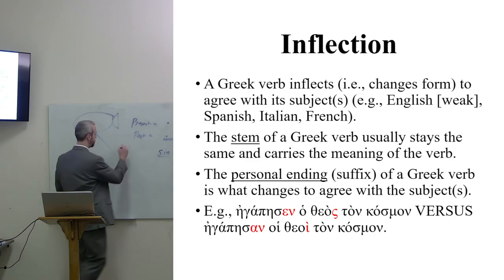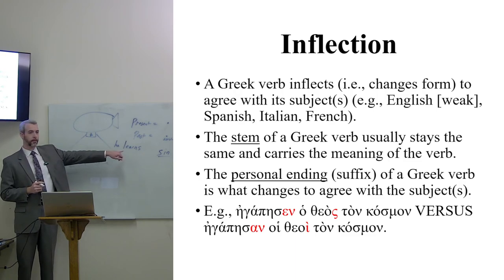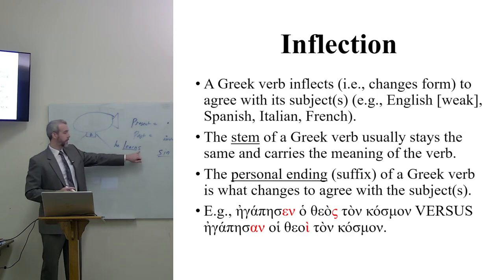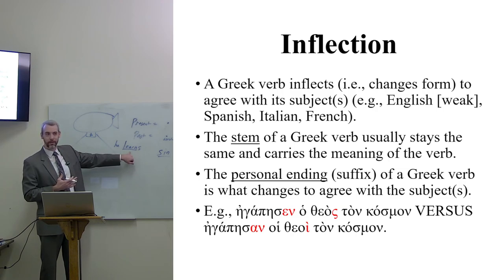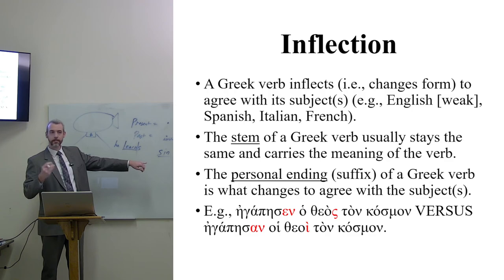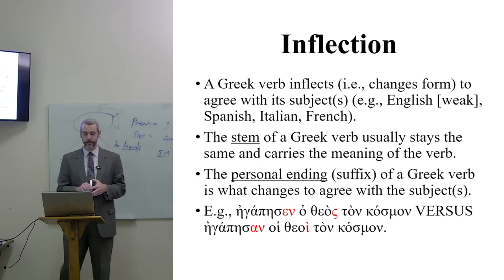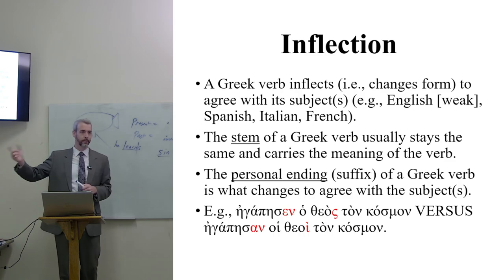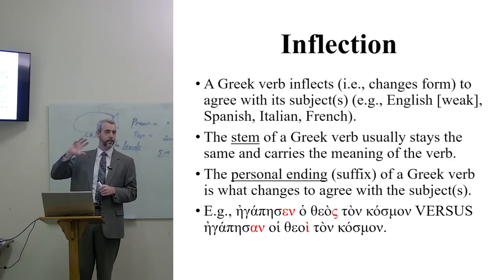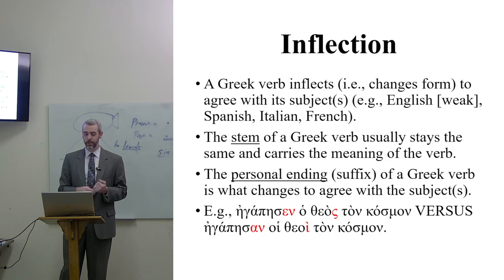Greek verbs are going to be very similar to what we've reviewed. They inflect — they change form — just like some English verbs change form to agree with the subject. In English this is weak, but you see it strongly in Spanish, Italian, French, and very much so in Greek. By inflection, I mean changing form to match the subject. The stem of a Greek verb usually stays the same and carries the meaning. For example, 'he learns' — the stem is 'learn,' and the 's' tells you about person and number but nothing about meaning. Same in Greek: endings are attached to tell you first, second, or third person, singular or plural; the stem carries the meaning of the word.